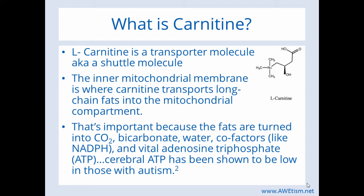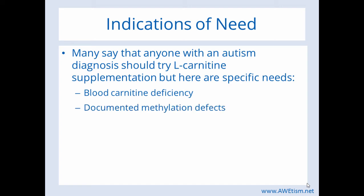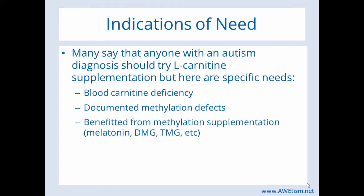ATP is very important for our body to function optimally. Many say that anyone with an autism diagnosis should try L-carnitine supplementation, but here are some specific indications. First, blood carnitine deficiency — please discuss this with your healthcare provider, as they can test for carnitine levels. Second, documented methylation defects. If your child benefited from any methylation supplementation — the common ones are melatonin, DMG, and TMG — you should speak with your healthcare provider about carnitine.